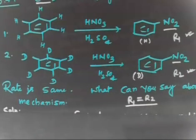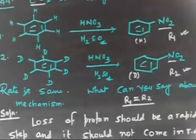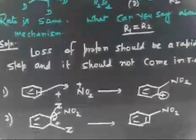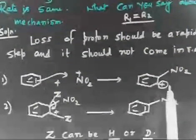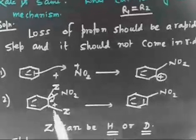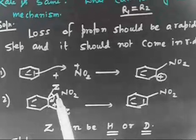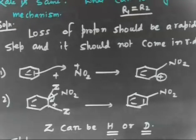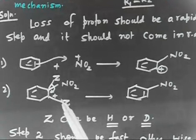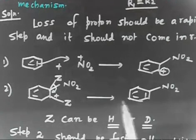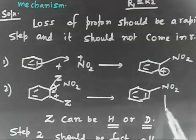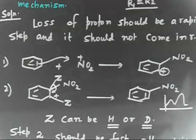So the first step is the slow electrophile attack, and the second step is when you lose H⁺ to restore aromaticity. In the second step, the leaving group can be either hydrogen or deuterium. Now let us assume for a moment that the second step is the rate-determining step and draw the corresponding potential energy diagram.